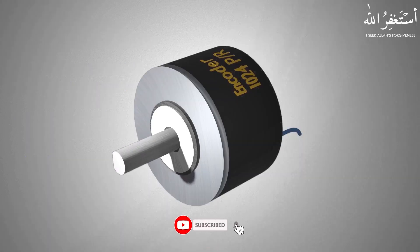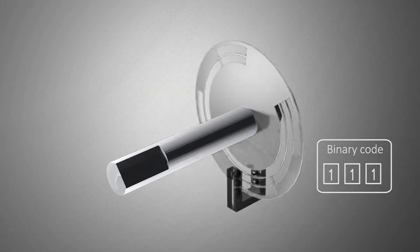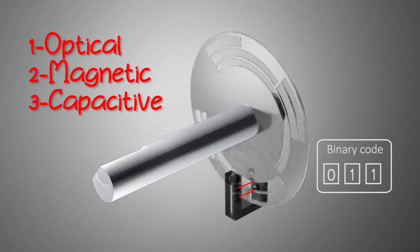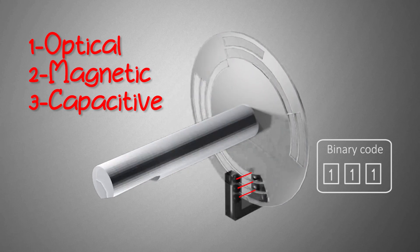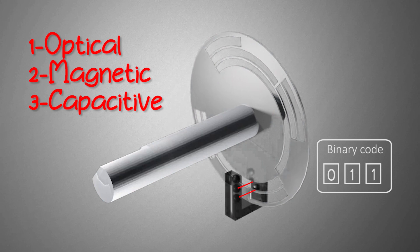However, all of these drawbacks are overcome using an absolute encoder. It uses optical, magnetic, or capacitive sensors to identify the unique position within a motor revolution.